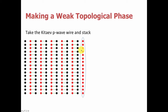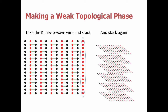The edge states only exist on a pair of edges, not on all edges. In this case we have edge states — low energy modes — on the left and right edges, but not on the top and bottom. We can now imagine taking these planes and stacking them up into 3D, and now we have a quasi one-dimensional, three-dimensional layered system, which is a three-dimensional weak topological phase. This system has surface states only on the left and right surfaces, not on the front, back, top, or bottom.